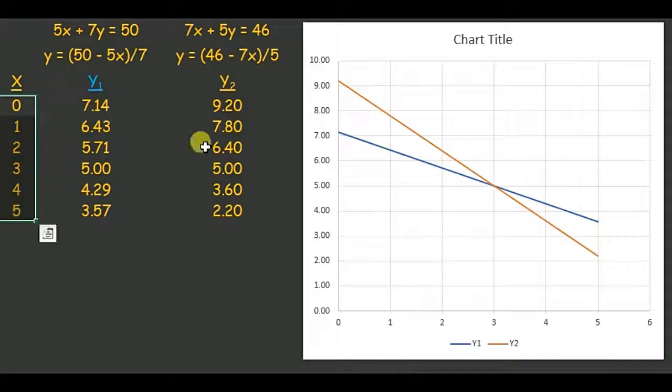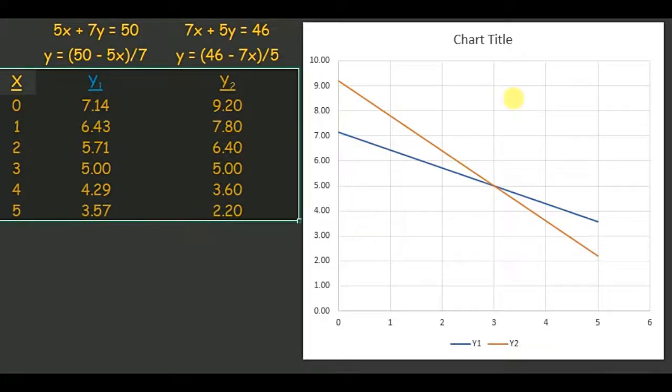I take this table and plot it into the chart. It gave me these two intersecting lines. The place where they are intersecting, you can see here, x is 3 and y is 5.